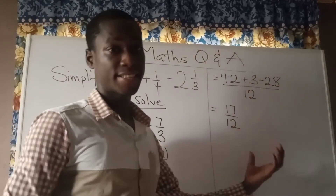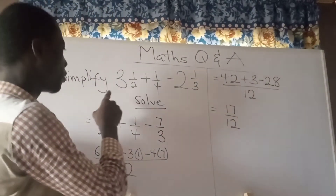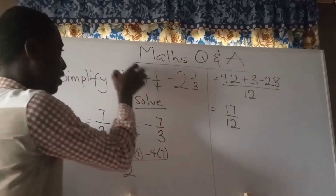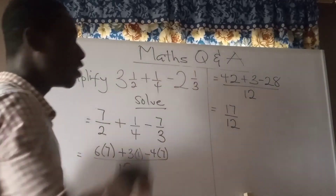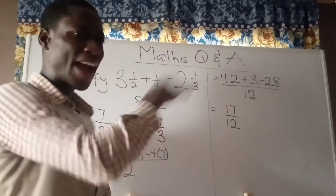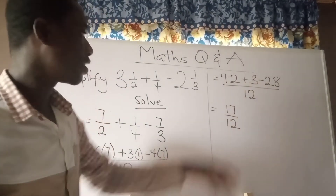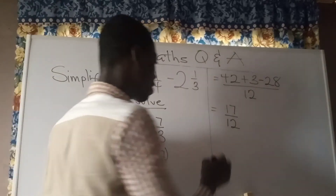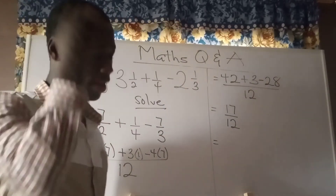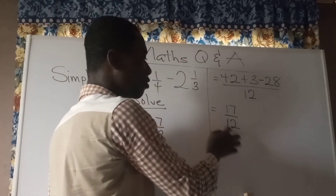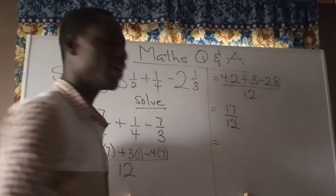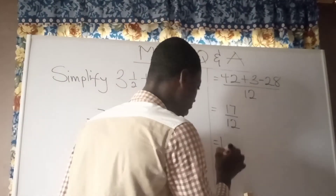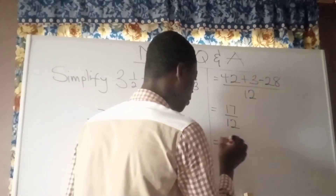You could leave the answer as 17/12, but since the original question had mixed numbers, we should convert back to a mixed fraction. To convert an improper fraction to a mixed number, divide the numerator by the denominator: write the quotient as the whole number and the remainder as the new numerator. 17 divided by 12 gives 1 remainder 5, so our final answer is 1 and 5 divided by 12.